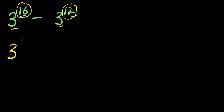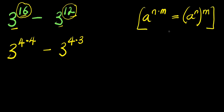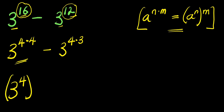We have three to the power of four times four, minus three to the power of four times three. Now if you have a to the power of n times m, this equals a to the power of n, all raised to the power of m. Applying this identity, we are going to have three to the power of four, raised to the power of four, minus three to the power of four, raised to the power of three.